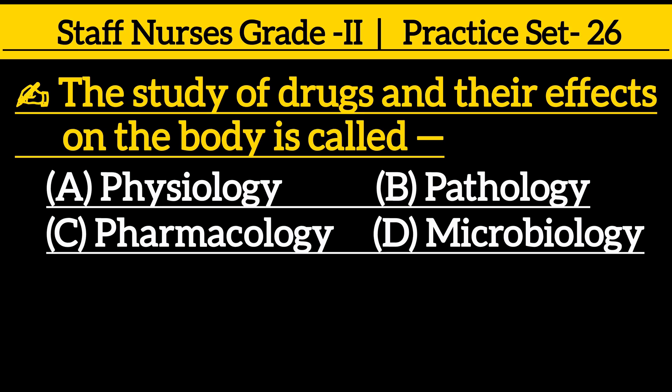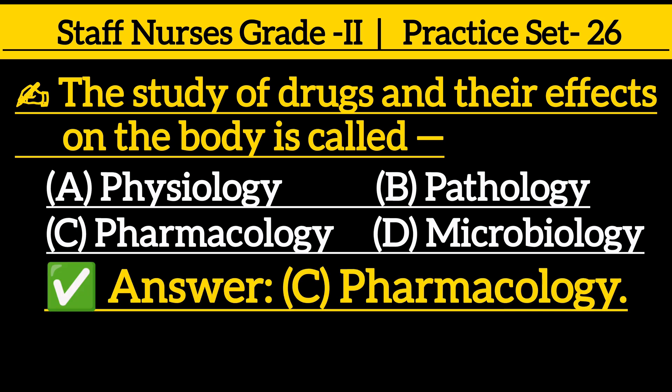The first question: the study of drugs and their effects on the body is called — option A: physiology, option B: pathology, option C: pharmacology, option D: microbiology. The correct answer is option C: pharmacology.